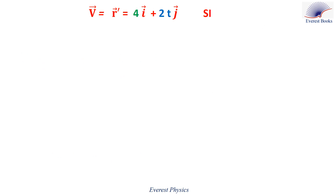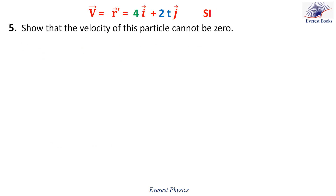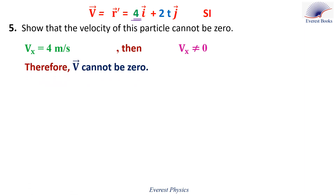Let's move to part five: show that the velocity of this particle cannot be zero. Looking at the components of the velocity, vx equals 4 meters per second. Therefore vx is different from zero at any instant. If one component of a vector is different from zero at any instant, then the vector cannot be zero at any instant. Therefore, the velocity of this particle cannot be zero.